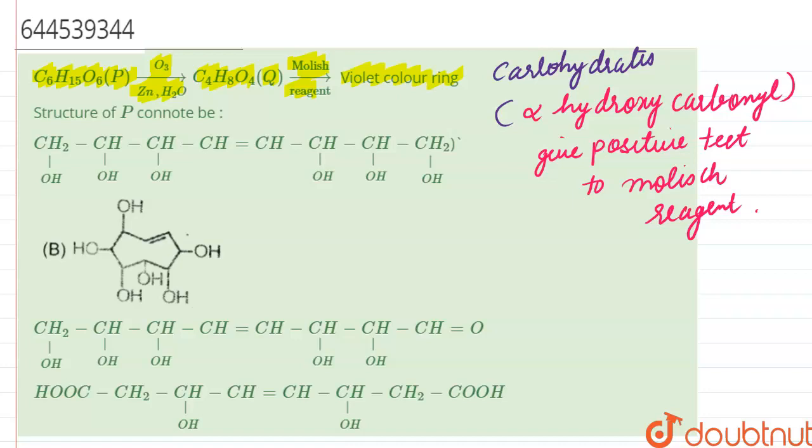When this structure P in option number A, if this is basically gone through ozonolysis, we will get a double bond O over here and a double bond O over here. This structure is basically an alpha hydroxy carbonyl, since we have alpha position, we have an OH, and we have carbonyl compound.